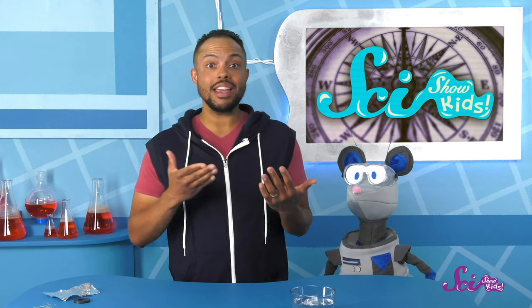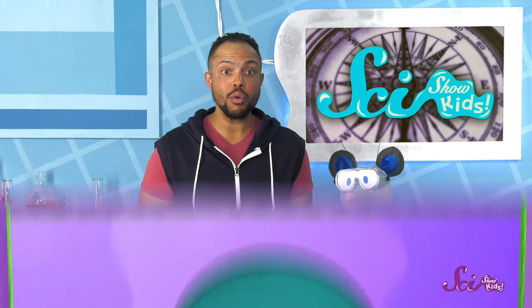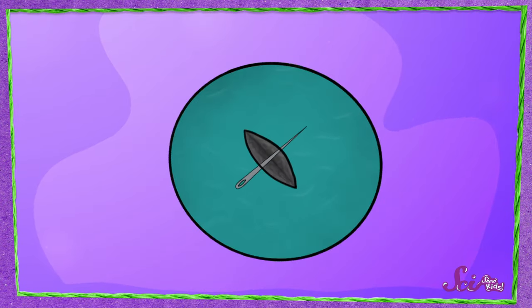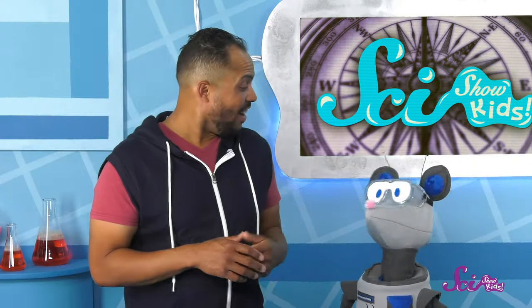Exactly, Squeaks! Since the Earth's magnetic poles are always pulling on the poles of other magnets, all we had to do to get our magnetized needle to point north was let it freely spin about in response to those forces. Which is what the foil and water were for. Cool, huh?